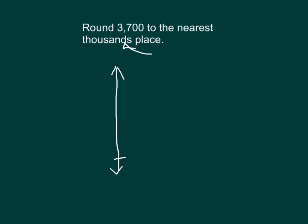We're going to place two marks on our number line. For the lower mark and lower endpoint, we will mark it with three thousands, since there were three thousands within our number 3,700. If we add one more thousand to three thousands, we have four thousands, so we mark the upper endpoint as four thousands.